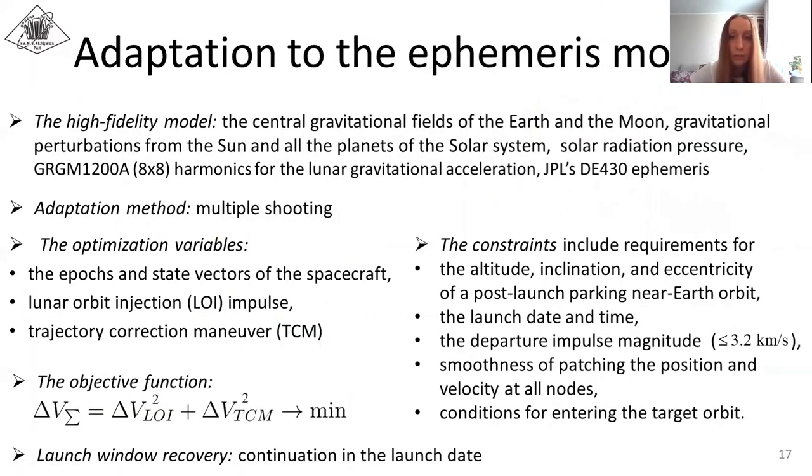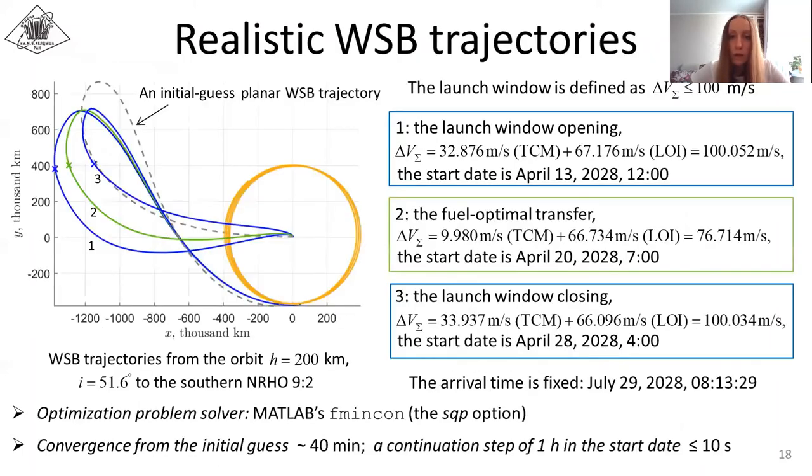Designed planar WSB trajectories represent very good initial basis for the multiple shooting method of adaptation to the high fidelity model of motion that includes the central gravitational fields of the Earth and the Moon, gravitational perturbations from the Sun and all the planets, solar radiation pressure, and harmonics for the lunar gravitational acceleration truncated to degree and order 8. After the convergence is reached, the whole launch window corresponding to specific conditions may be recovered by the continuation in the launch date.